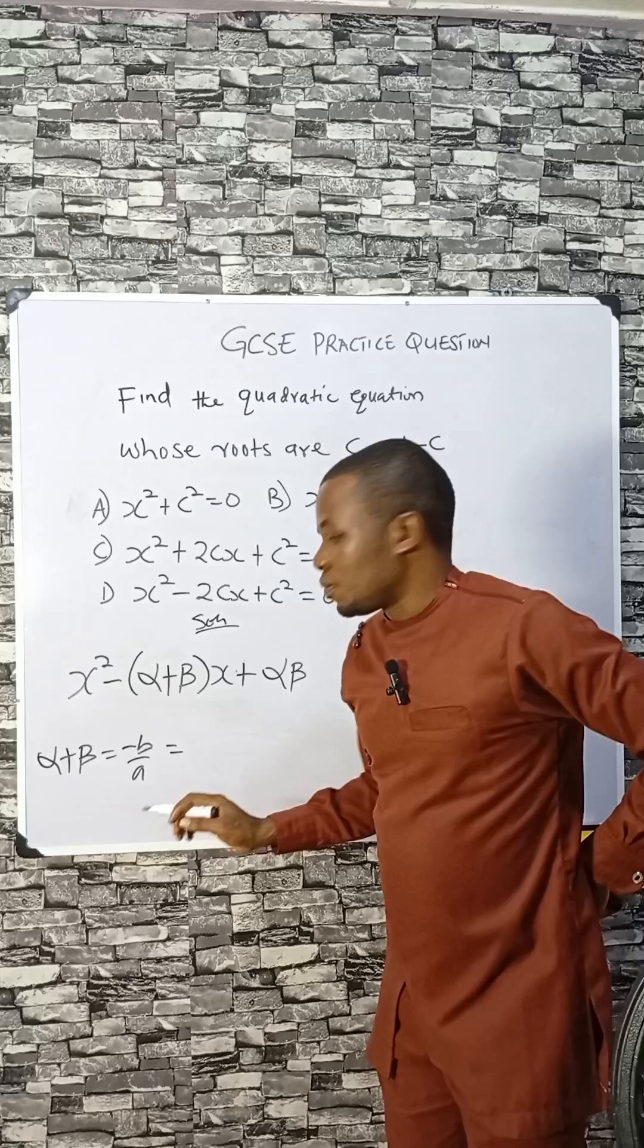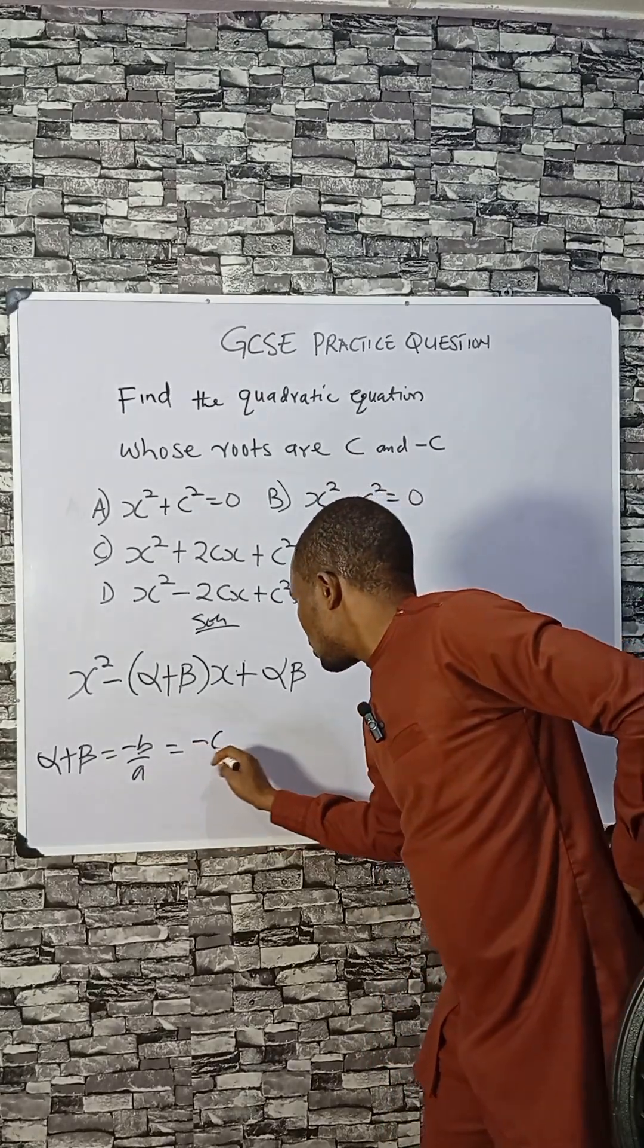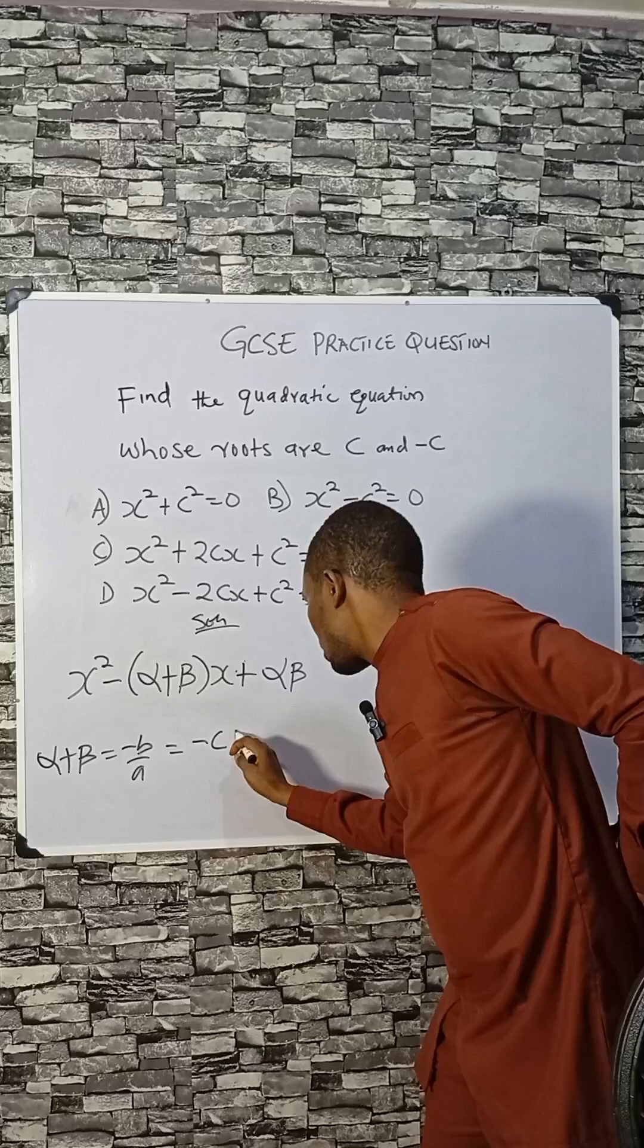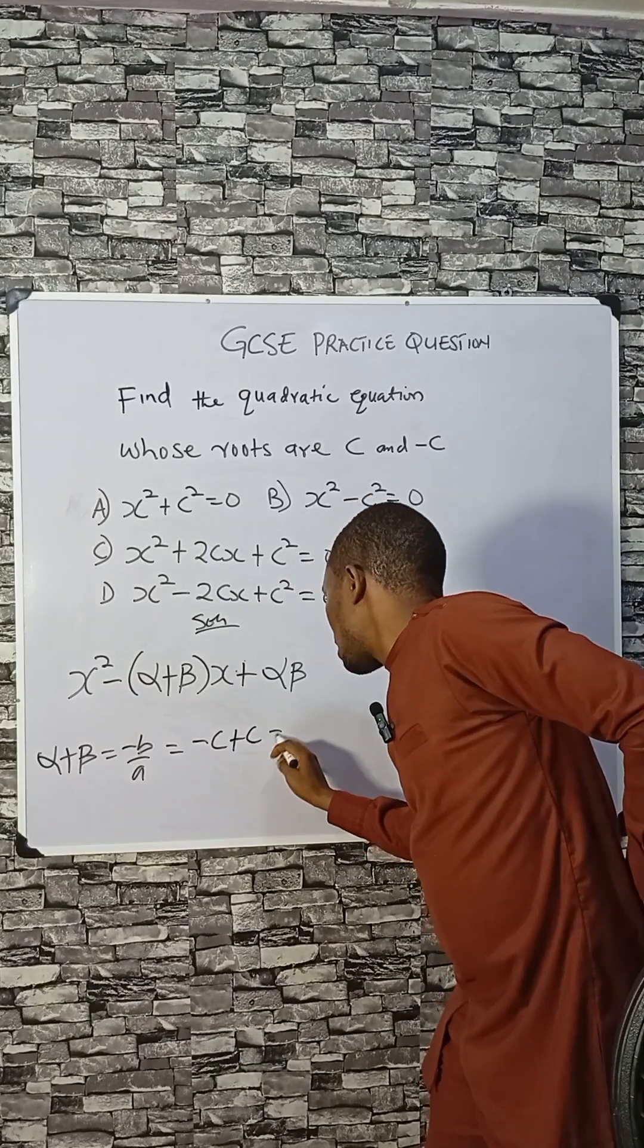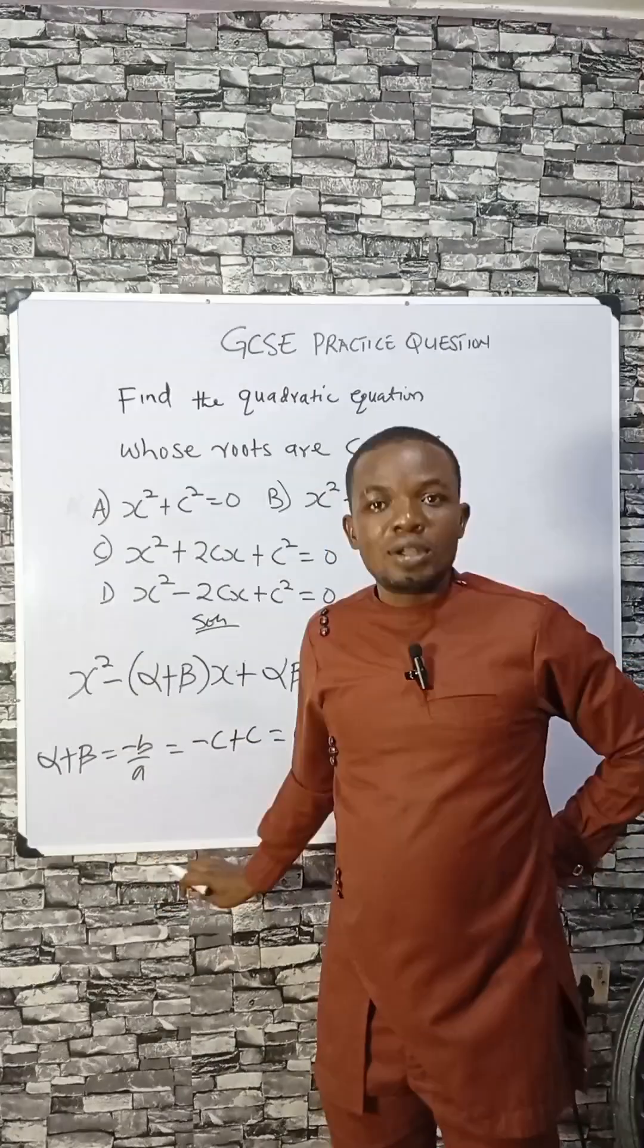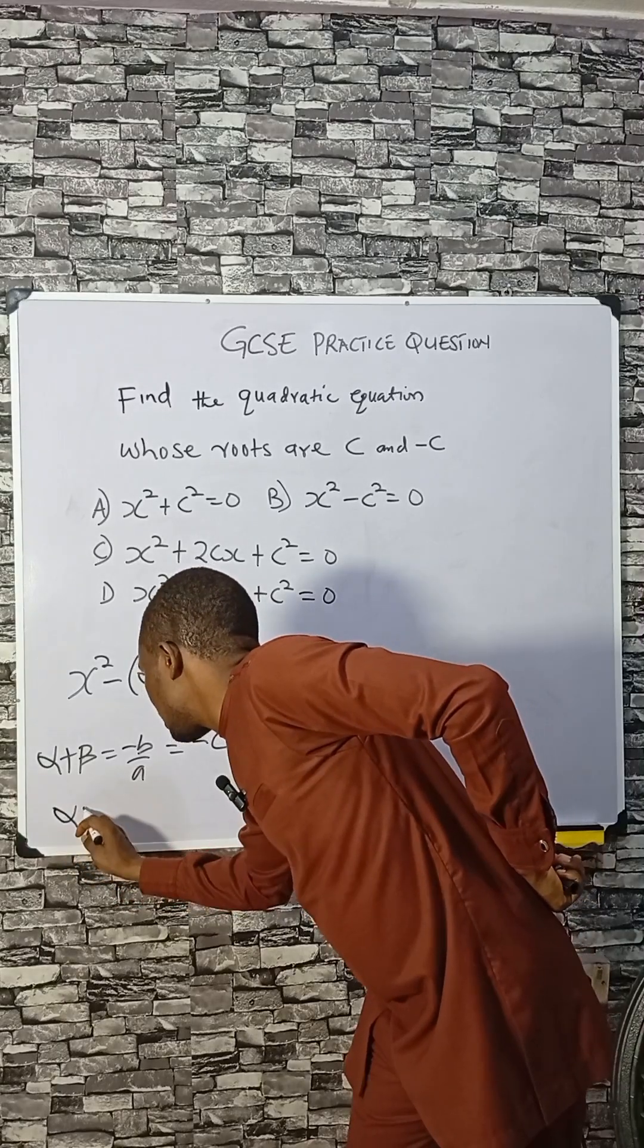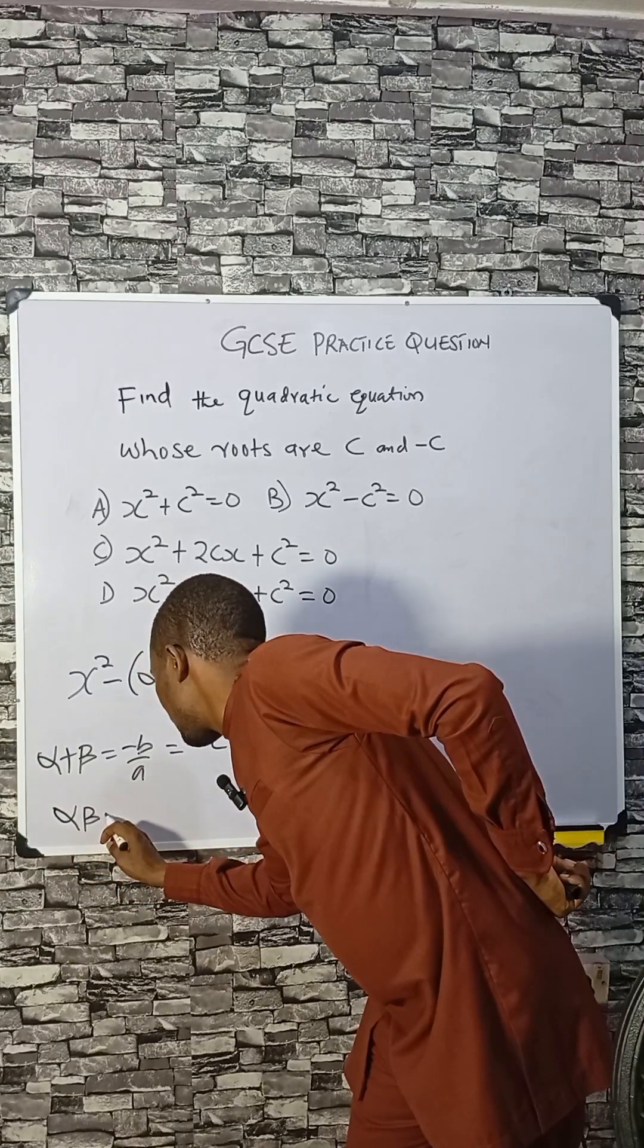If we add the two roots, the roots are minus c and plus c, as given here. So minus c plus c, that is zero when we add the roots. Now let's find the product, which is alpha times beta, given to